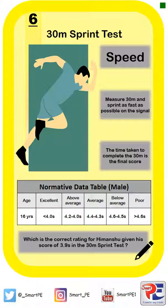This test measures speed and the protocol is quite simple. An athlete is going to sprint as fast as they possibly can over a distance of 30 metres and receive a time. They're going to do this three times, use their fastest time from the three runs, and compare that to the normative data table in order to get their rating for speed.